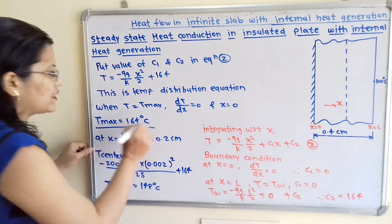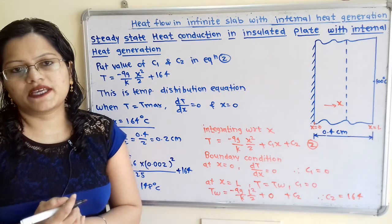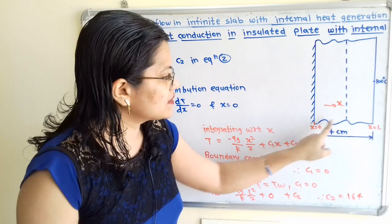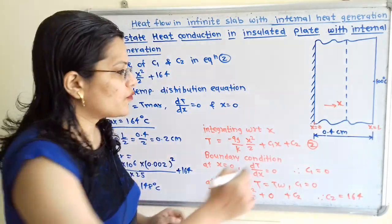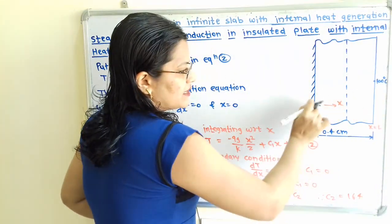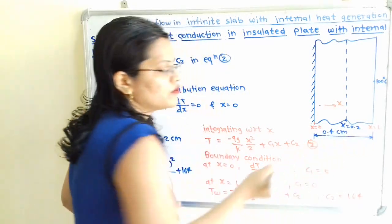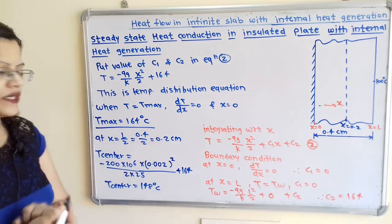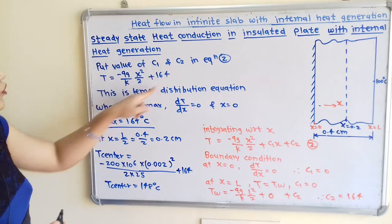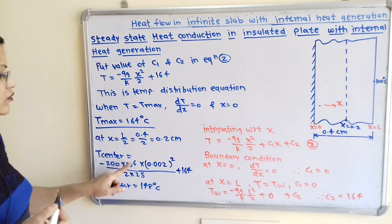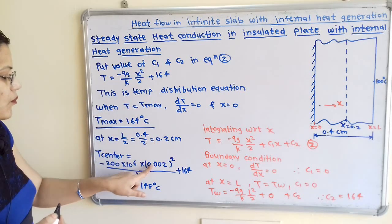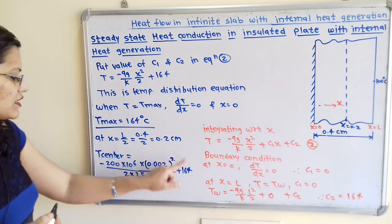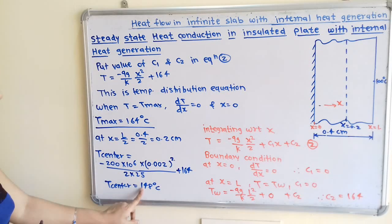Now we need to find the temperature at the center of the plate. Since the thickness is 0.4 centimeter, the center is at x equal to 0.2 centimeter from the insulated side, which is 0.002 meter. Substituting into the temperature distribution equation: T center equals minus 200 into 10 raised to 6 times 0.002 squared divided by 2 into 25 plus 164. Solving this, T center is equal to 148 degree Celsius.